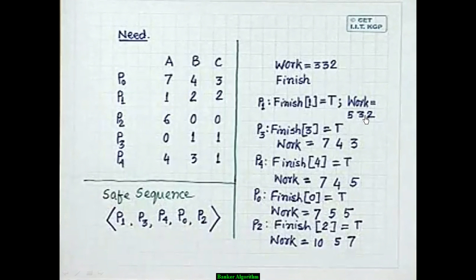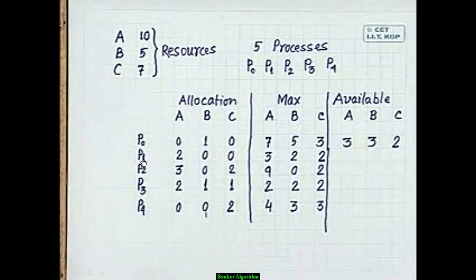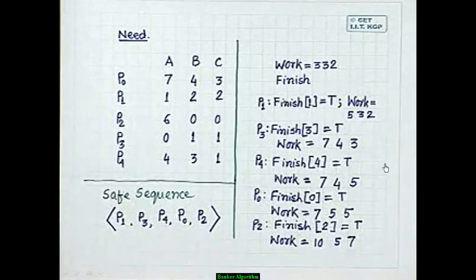Continue: check P2 — Need = [6,0,0], not ≤ [5,3,2], skip. Check P3 — Need = [0,1,1] ≤ [5,3,2], take it. Set Finish[P3] = true. Work = [5,3,2] + Allocation[P3] = [5,3,2] + [2,1,1] = [7,4,3]. Continue this process for the remaining processes.